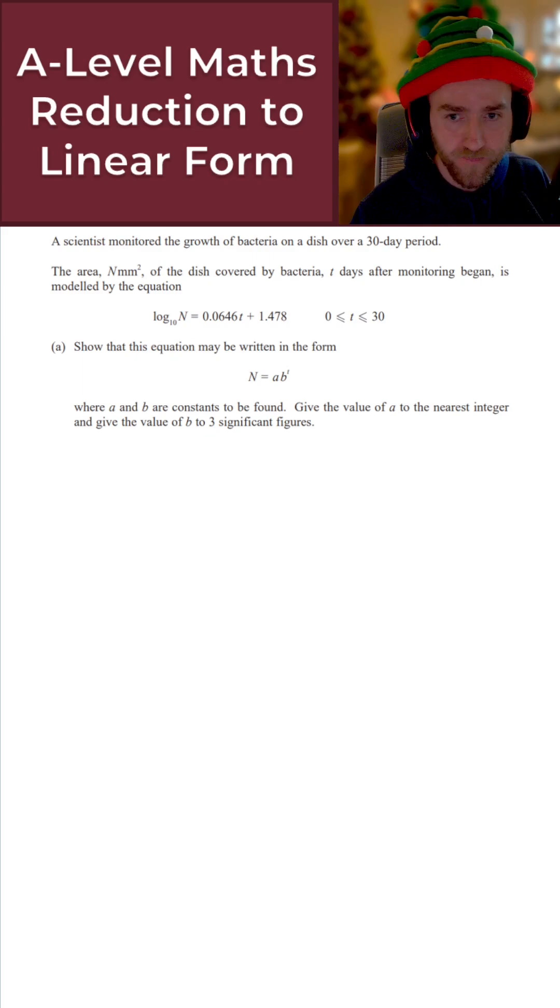Now, the beauty of this is that on the left-hand side, they will just cancel out. So 10 to the power of log N base 10 is just simply N. They just cancel out. And if we get N, that's exactly what we want here. So let's just do that on the line underneath.